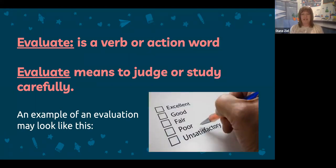Here's an example of what a teacher may use to evaluate work, depending on the quality of the work, on a scale of excellent to unsatisfactory. They're making a judgment of the student's understanding of the material. This is an evaluation — the work they're actually doing is evaluating.